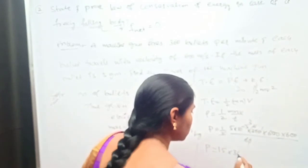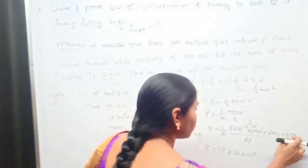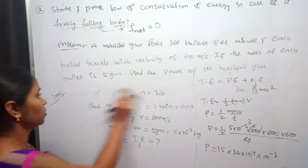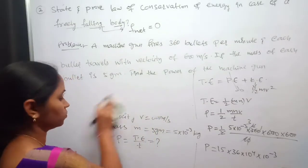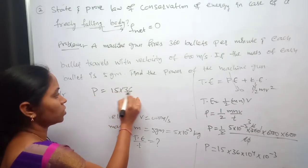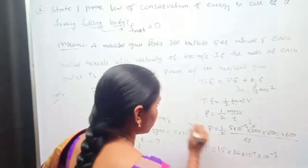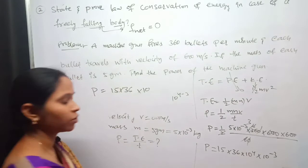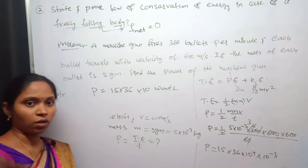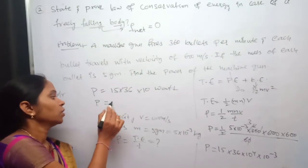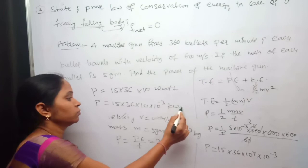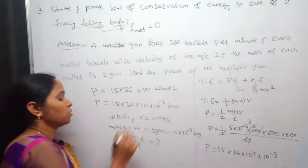Solving: 600² = 36 × 10⁴. Then power = (1/2) × 360 × 5 × 10⁻³ × 36 × 10⁴ / 60. This simplifies to 15 × 36 × 10⁴⁻³ = 15 × 36 × 10 watts = 5400 watts. To convert to kilowatts, multiply by 10⁻³, giving 5.4 kW.